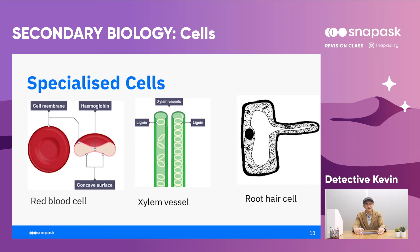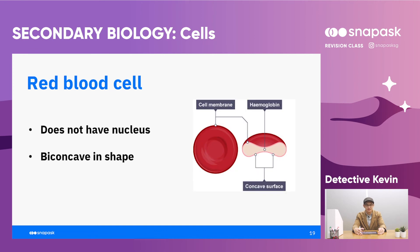Let's take a look at some specialised cells. We have the red blood cell, the xylem vessel, and the root hair cell. Each of them is adapted specifically to serve their own function. The red blood cell does not have a nucleus, because this allows it to carry more haemoglobin to combine with and carry more oxygen. The red blood cell is biconcave in shape, which increases the surface area to volume ratio for gaseous exchange during diffusion at a faster rate.